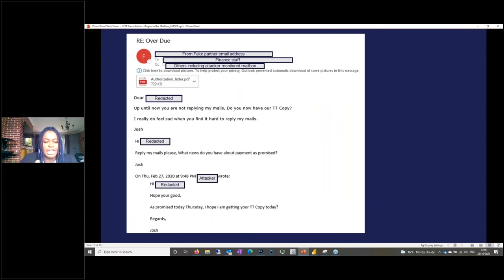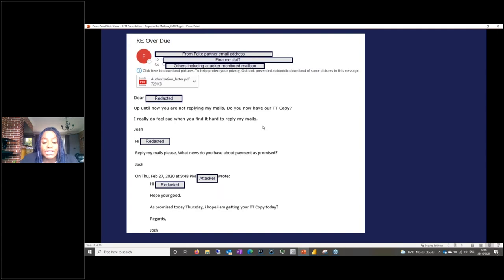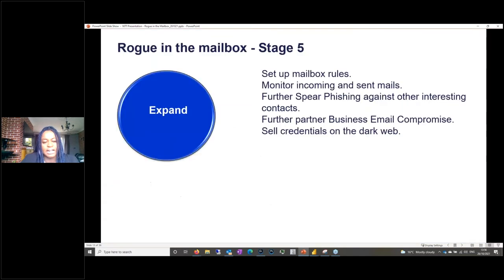For example, after the compromise, the attacker is trying to convince this person: 'Up to now you are not replying my emails. You now have our TT copy.' Even the grammar is not what you'd expect in a corporate environment. Users are not able most times to detect the telltale signs of a rogue in the mailbox.